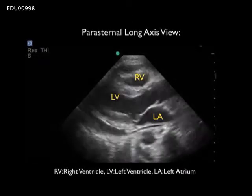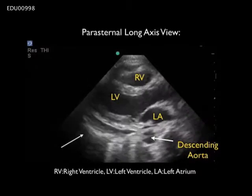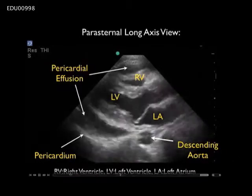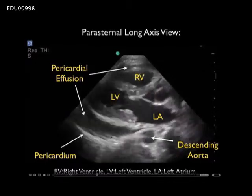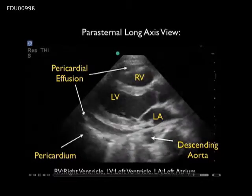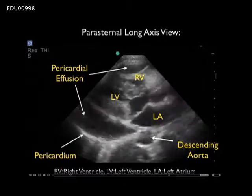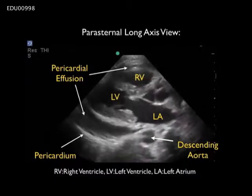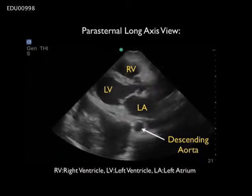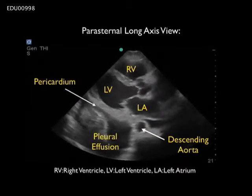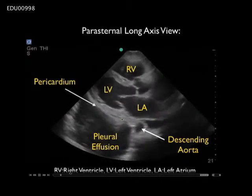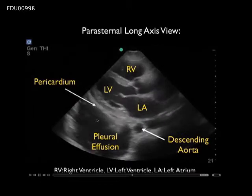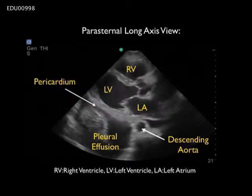In this first video we begin by identifying the posterior pericardial reflection and the descending aorta just posterior to the left atrium. We see anechoic or dark fluid around the heart, but notice that it's anterior to both the descending aorta and the posterior pericardial reflection, and therefore is within the pericardial sac — with fluid visible both anterior and posterior to the heart. In the next video, the large amount of anechoic fluid is posterior to both landmarks, confirming this as a pleural effusion. We can also see lung moving back and forth within the pleural effusion.